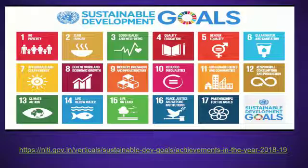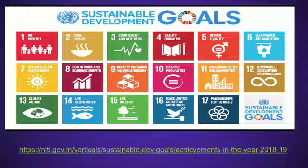The 17 Sustainable Development Goals are: 1. No poverty, 2. Zero hunger, 3. Good health and well-being, 4. Quality education, 5. Gender equality, 6. Clean water and sanitation, 7. Affordable and clean energy, 8. Decent work and economic growth, 9. Industry, innovation and infrastructure, 10. Reduced inequalities, 11. Sustainable cities and communities, 12. Responsible consumption and production, 13. Climate action, 14. Life below water, 15. Life on land, 16. Peace, justice and strong institutions, 17. Partnerships for the goals.